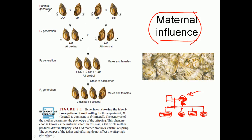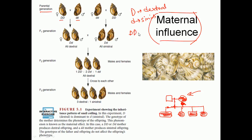The classic pattern of maternal inheritance is seen in snail coiling. In the parental generation, we have a female that is capital D capital D and a male that is small d small d. Capital D is for dextral coiling and small d is for sinistral coiling. Capital D is dominant, so capital D capital D and capital D small d are both dextral, while only small d small d gives sinistral.